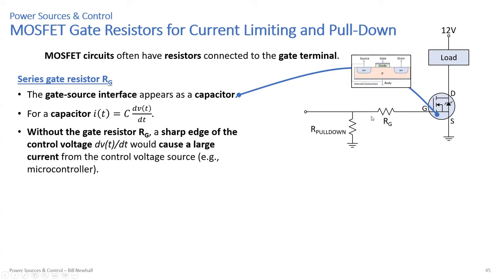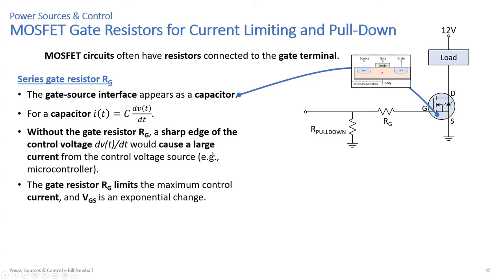Without that gate resistor, if you have a sharp gate voltage appearing between gate and source, that causes a large dV/dt, which could cause a large current from whatever is providing that control voltage — like your microcontroller. That gate resistor limits the maximum control current. In theory, an infinite slope rise of VGS would require infinite current. On some digital outputs, that could cause problems — blowing out the output stage or causing glitches in that digital circuit.